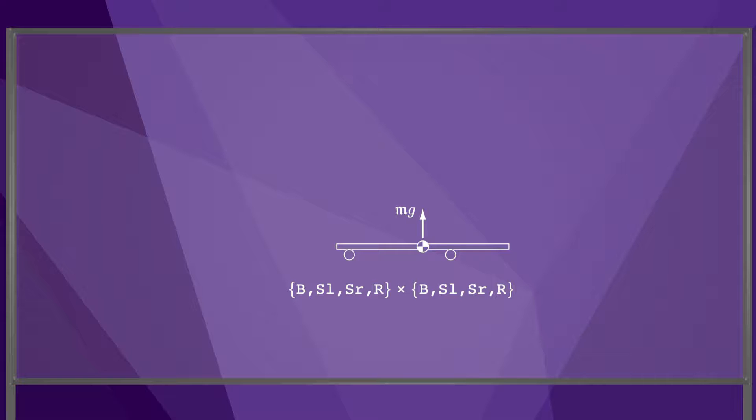In general, each of the two contacts could be braking, sliding left, sliding right, or rolling, for a total of 16 possible contact modes between the fingers and the stick. Some of these contact modes are not possible kinematically. For example, the contact mode RR is not possible. There is no way for the stick to remain stationary relative to both fingers as the fingers move toward each other.